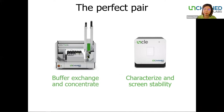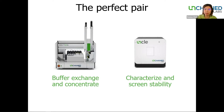To fast track the development process and to characterize these stabilizing characteristics, Unchained Labs has the perfect two tools to help you. Big Tuna is here to automate buffer exchange and concentrate AAV samples into the right working conditions and concentration range, and UNCLE is here to help you characterize the stability of AAV particles.